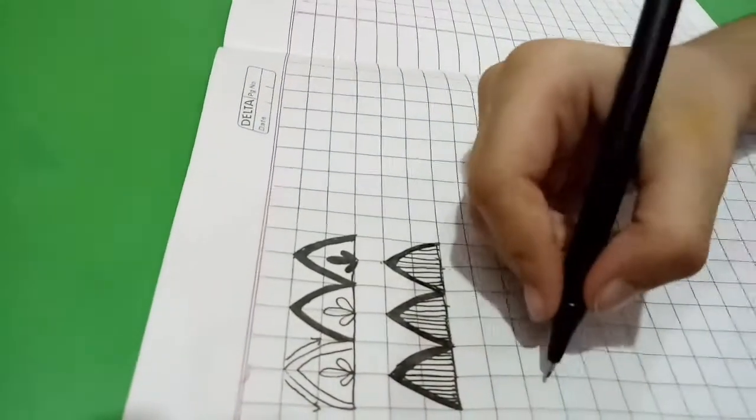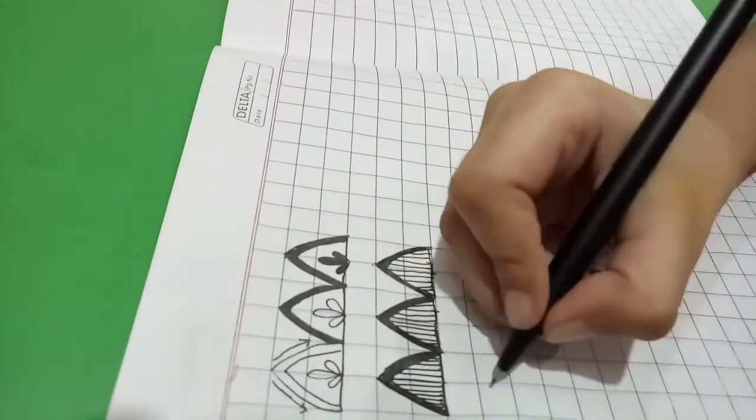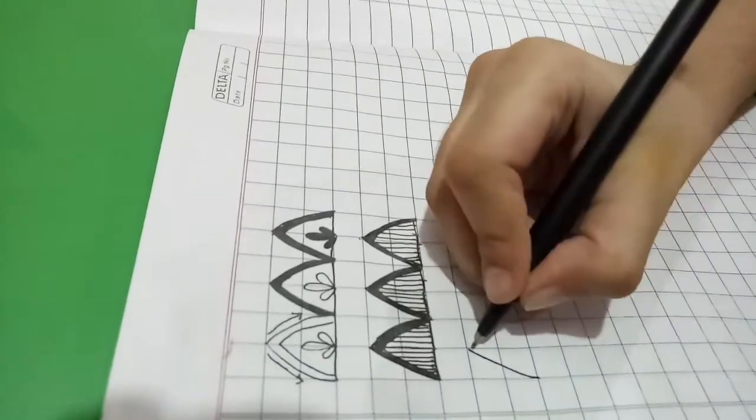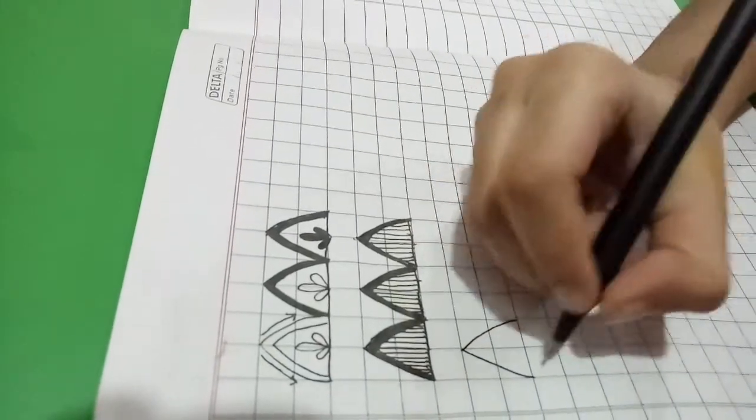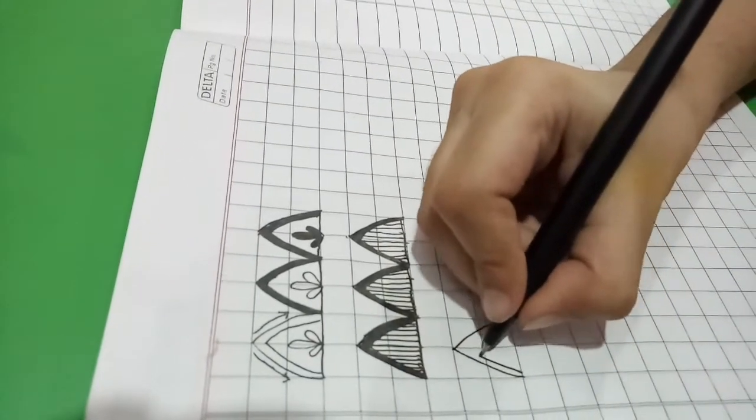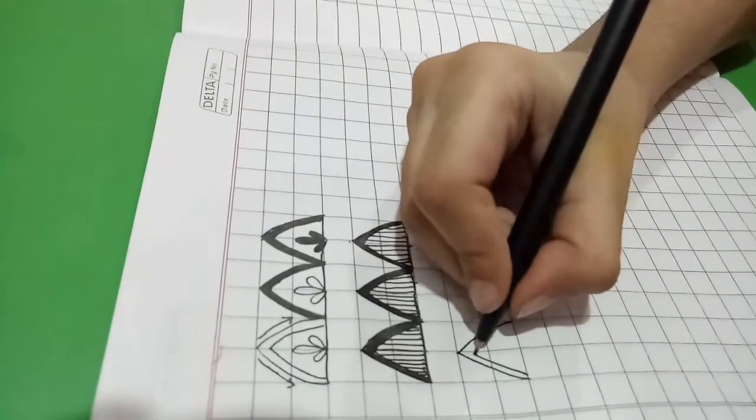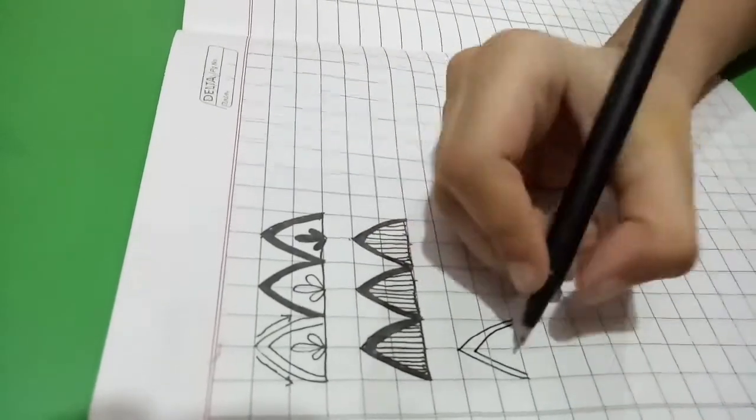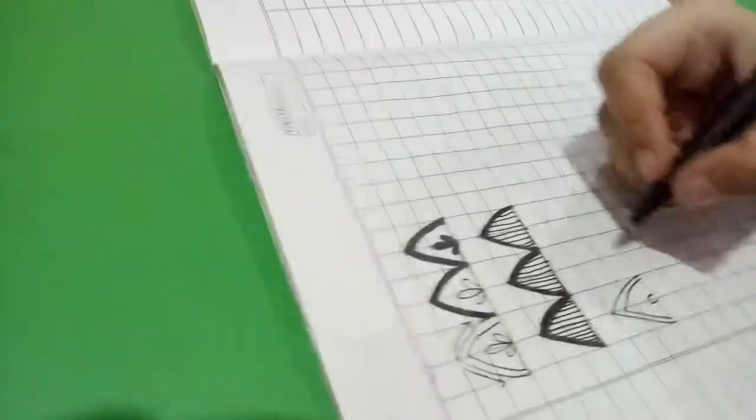Now the next pattern is to make a shape again like this. Make a parallel line to it, and then make an oval over here.